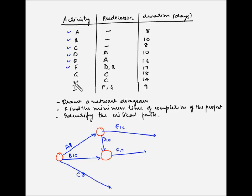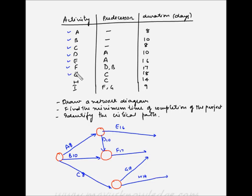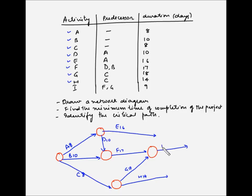Next are G and H which are dependent on C. This will be the ending node for C, and from here I draw G and H. G takes 18 days and H takes 14 days. Next is I which is dependent on F and G, so I draw the ending node for these and from this node draw I, which takes 9 days. Since I is the last activity, it ends at the finish node.